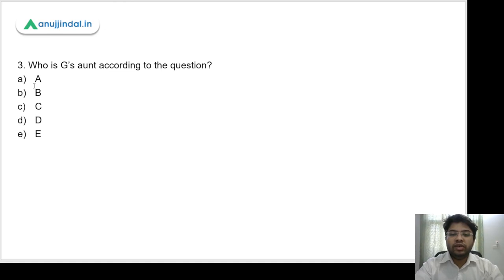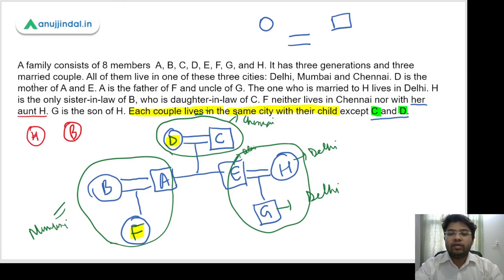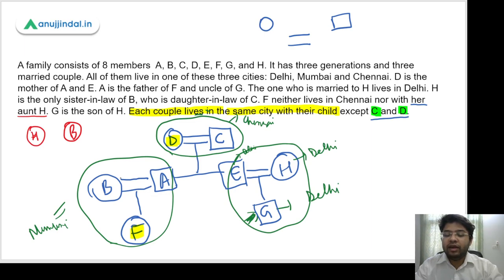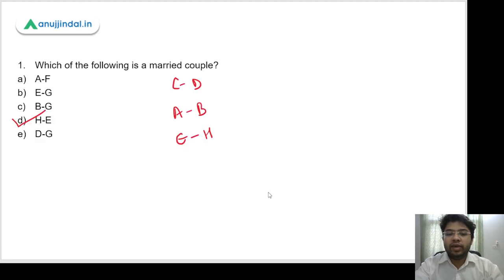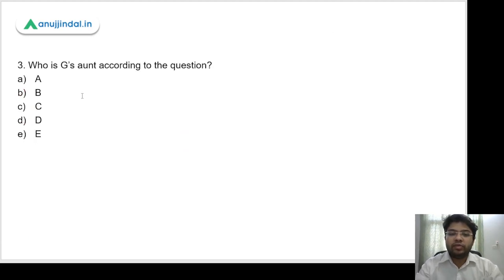Question 3: Who is G's aunt? G's father is E, E's brother is A, and A's wife is B. So B is G's aunt. The correct answer is option B.